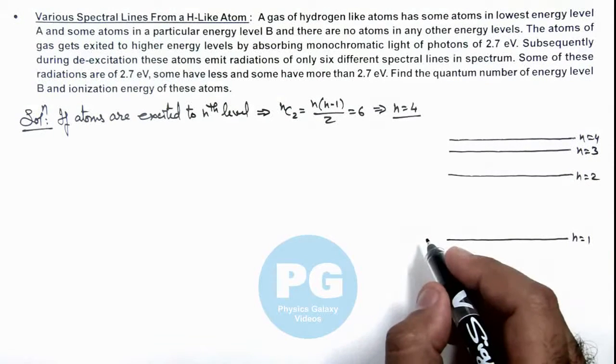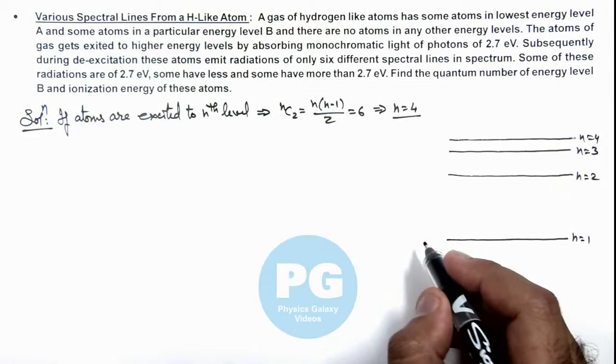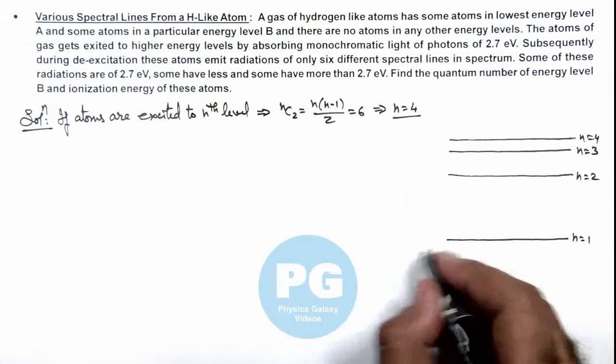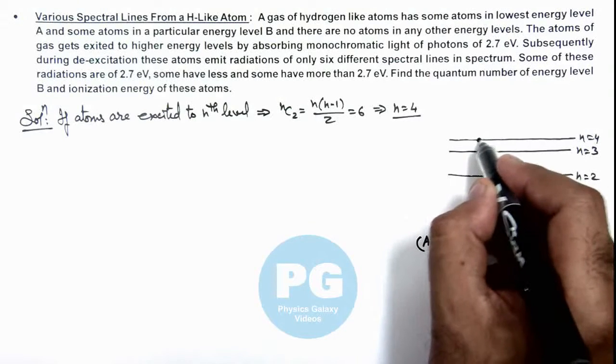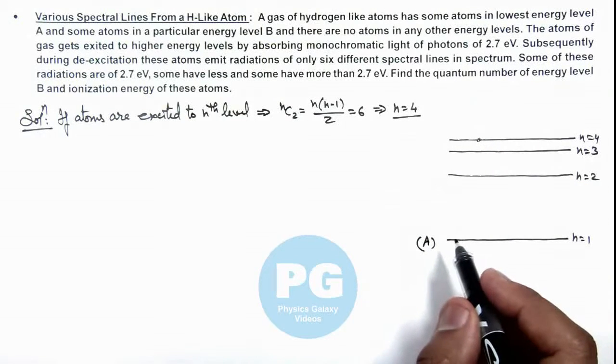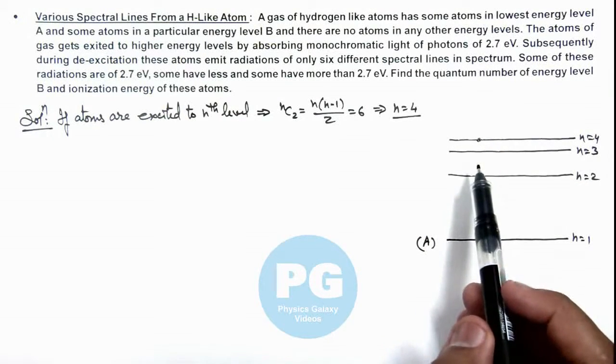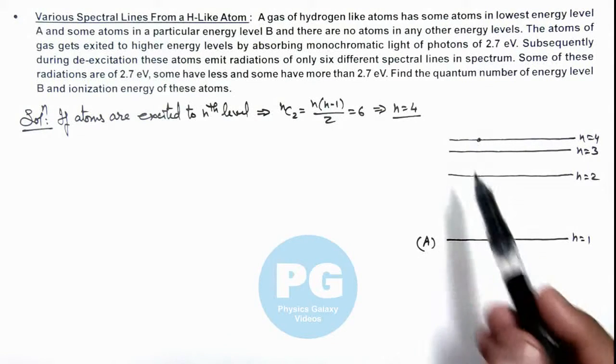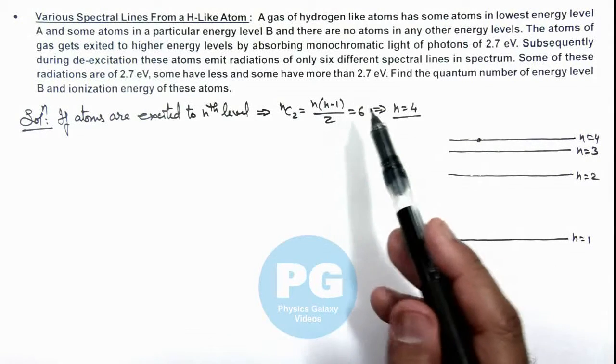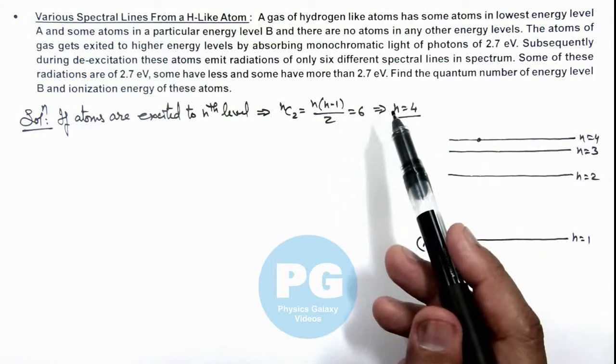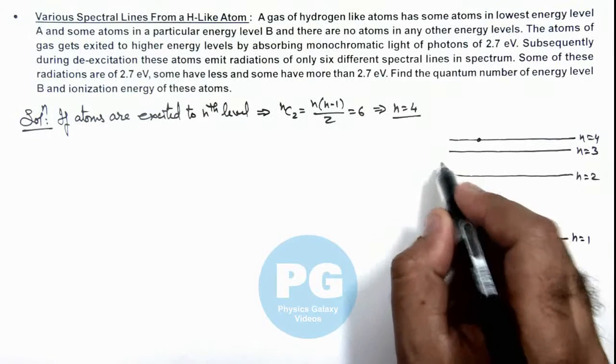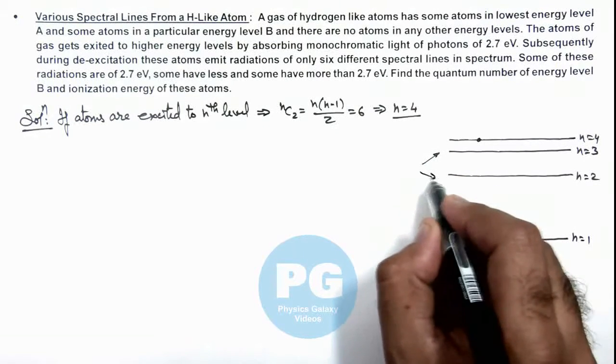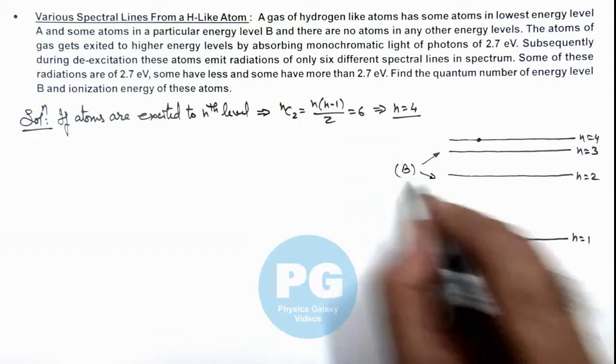We can consider some atoms are in the lowest energy level A, and finally the atoms are excited to 4. So obviously the difference of energy between either A to 4 or B to 4 should be 2.7 electron volts when the electrons are excited. So B has to be either 2 or 3, either this or this would be the possible state B.